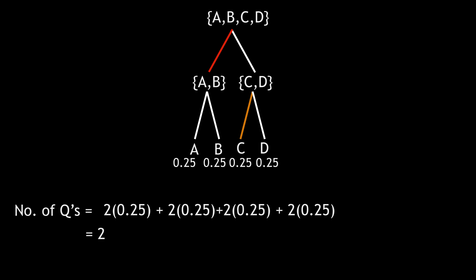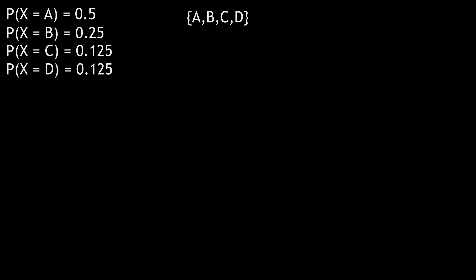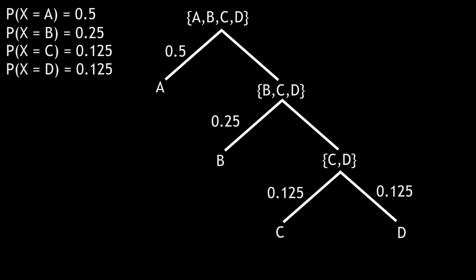That was a pretty straightforward case, but what about when the probabilities are not equal? Like for the symbols being sent to chemist B? Well, this changes the best way to ask questions. In this case, we ask, is it A, is it B, or is it C? And like before, we want to calculate the expected number of questions that need to be asked in this case.